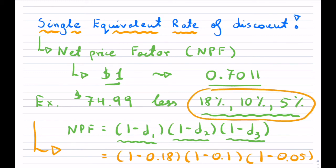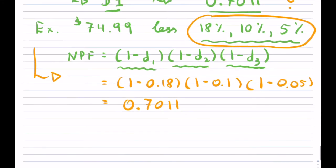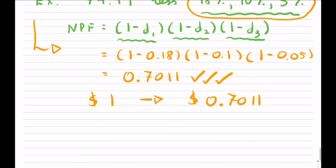So instead of saying a discount series, what is just one rate that we can find instead of that? Well, it turns out, if you have the net price factor, this right here, so this would mean that for every $1, we actually pay 0.7011, and again, don't round this, although it's money, that's how much we actually pay.